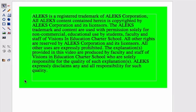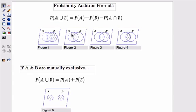Probability of intersection or union word problems. In these problems we're going to be using this formula — it's the probability addition formula. Basically if you have two events that are occurring, event A and event B — and this might represent how many people like red and how many people like french fries, just two events. This union symbol looks like a U, and this is like saying 'or'.